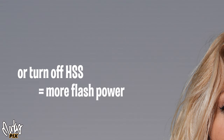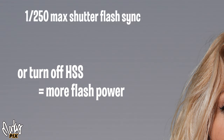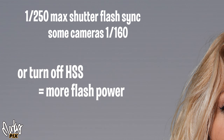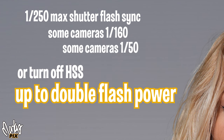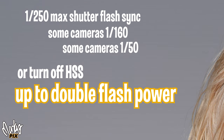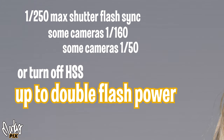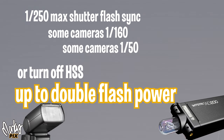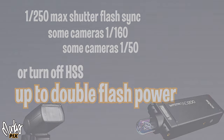You get much more power out of your flash by turning off high speed sync anyway. You might have to use an ND filter, because without high speed sync most cameras won't go above 1/250 of a second shutter speed — some cameras are 1/160, and some are only 1/50. But you'll get up to double the flash power without high speed sync, which is great when using smaller flashes like speedlights and AD200s. And you won't have those pesky annoying horizontal lines.